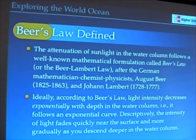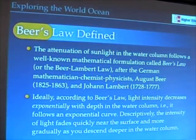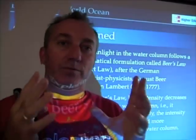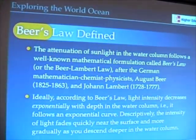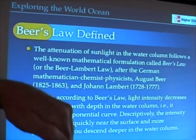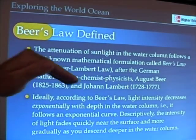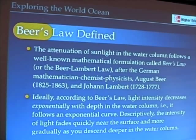The attenuation of light — the way in which light diminishes as you go deeper in the water column — follows a very well-known mathematical formula called Beer's Law, or the Beer-Lambert Law. Beer's Law describes how light decreases as you go deeper in the water column. As it turns out, it is an exponential decrease, meaning light decreases not in a regular linear fashion, but in a curvilinear fashion.